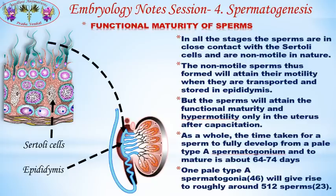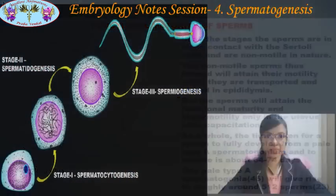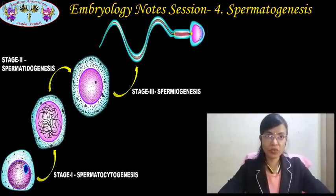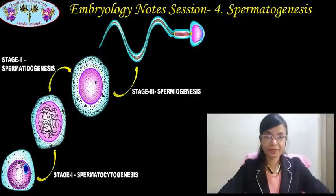As a whole, the time taken for a sperm to fully develop from a pale type A spermatogonium and to mature is about 64 to 74 days. One pale type A spermatogonium gives rise to roughly around 512 sperms. In the next session, notes for the structure of the sperm and sperm defects will be provided. Till then, bye.